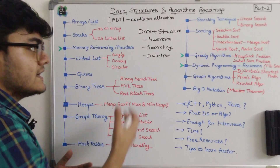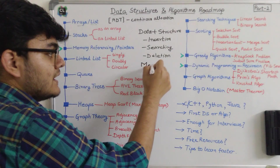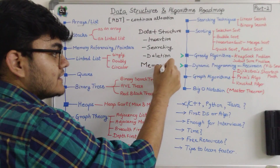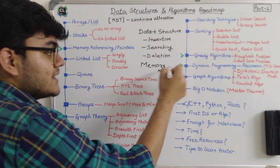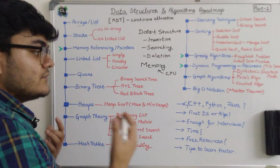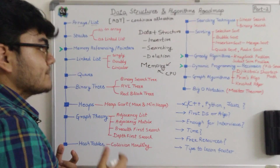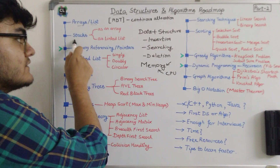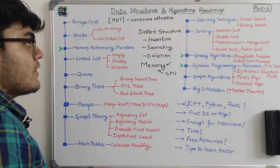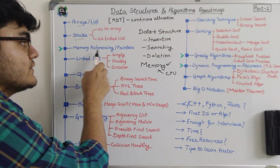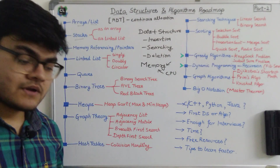For different data structures, because they have different structures of how they are stored inside memory, and the CPU accesses the main memory which is the RAM, you need to understand how these data structures are stored in main memory. The next data structure is stacks, which you can implement using an array or a linked list.